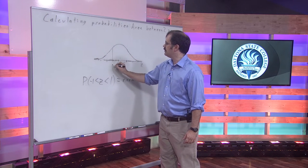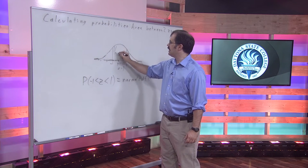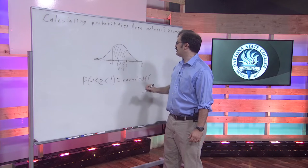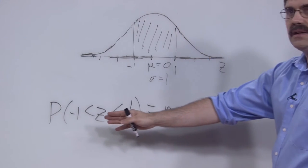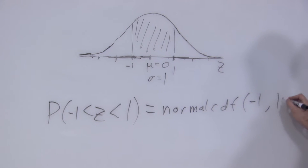We're trying to go from negative one to one, so we're looking at this area here under the curve. And what we're going to do is we don't even have to worry about those infinities. We just put in negative one comma one.